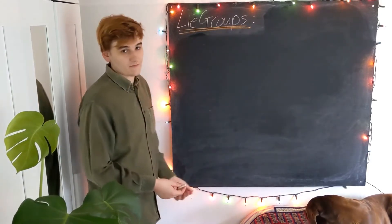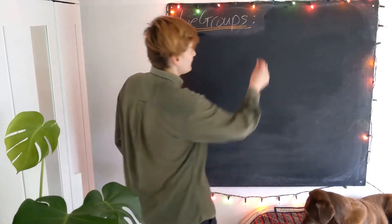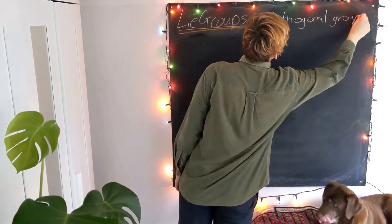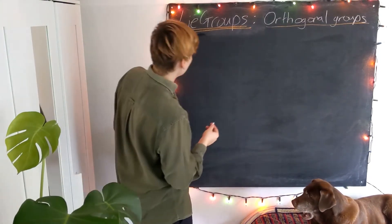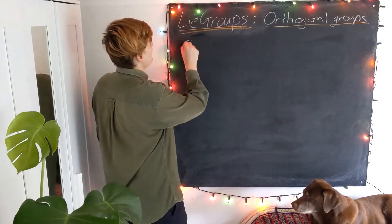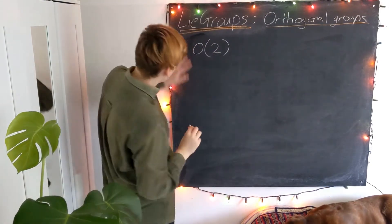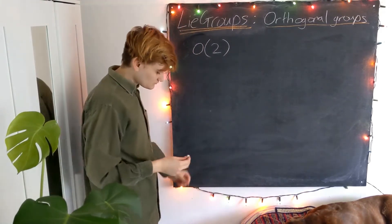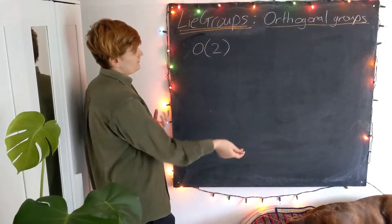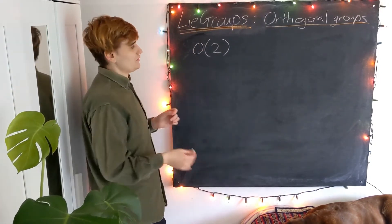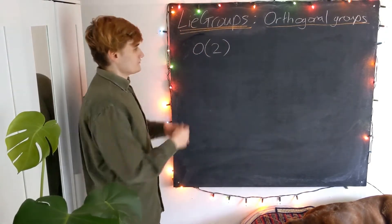That was the general linear group. Now let's talk about a slightly more interesting type of group, known as the orthogonal groups. I'll begin with probably the simplest example of an orthogonal group, which is going to be called O(2) — I'll introduce the S in a second. The O obviously stands for orthogonal, and the 2 corresponds to a kind of dimension, as we'll see shortly.